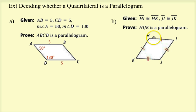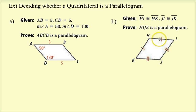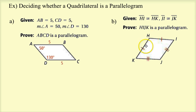For the second problem, HI is congruent to HK, and JI is congruent to KJ. While one of those six reasons might seem to apply, these are not opposite sides. I don't know anything about the angles or whether any sides are parallel. So HIJK is not proven to be a parallelogram — you do not know that it is a parallelogram from the given information.